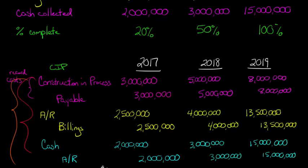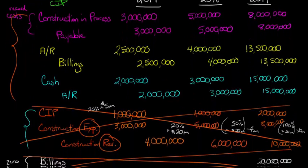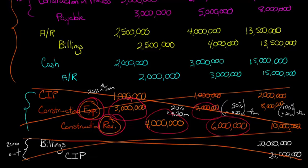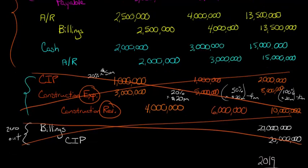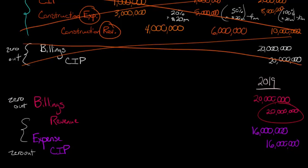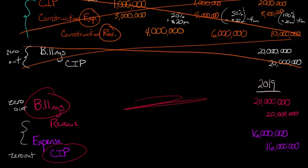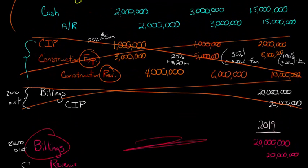A lot of these entries are exactly the same whether you use percentage of completion or completed contract. The difference comes in with the extra entries for percentage of completion, where we make entries to allocate expense and revenue in 2017 and 2018 because we haven't finished the contract yet — we don't make these entries under completed contract. With percentage of completion, we're recognizing a little expense and revenue each period, smoothing it across the contract life. With completed contract, it all gets dumped at the end: revenue of $20 million, expenses of $16 million, giving $4 million profit in 2019 — then we zero out the billings account and the CIP account.